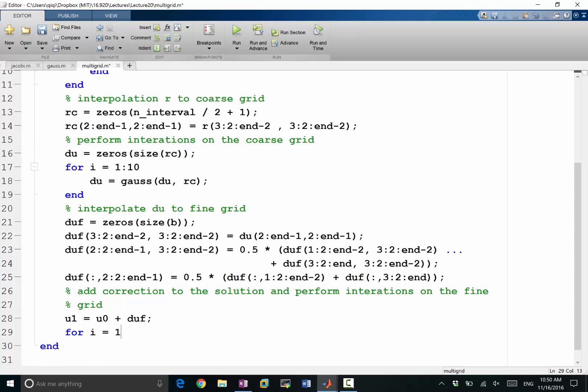And I want to perform iterations on the fine grid. So I'm going to for i goes 1 to 10, I'm going to perform 10 iterations on the fine grid. u1 will be equal to gauss_seidel of u1 and my B. All right, so that completes my multigrid, I mean two grid solution.